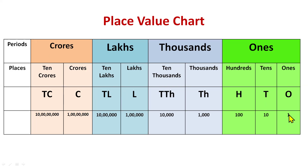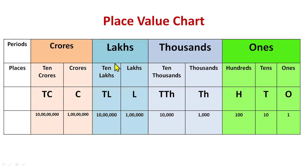Ones is written as 1 with no zeros, tens with one zero, hundreds with two zeros, thousands with three zeros, ten thousands with four zeros, lakhs with five zeros, ten lakhs with six zeros, crores with seven zeros, and ten crores with eight zeros.